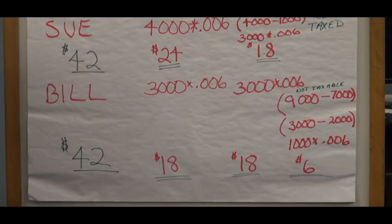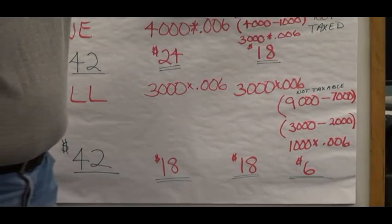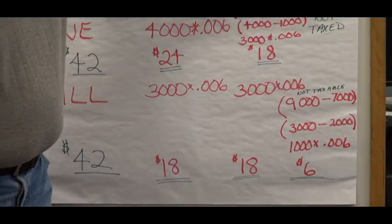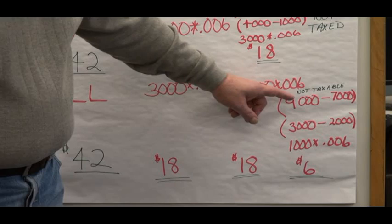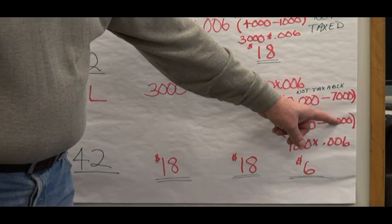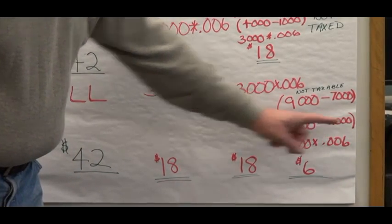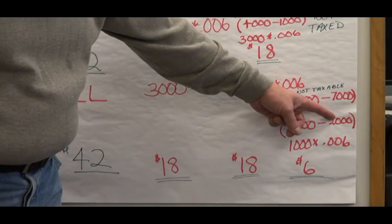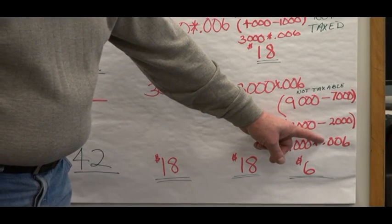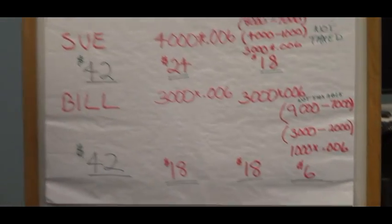In the third quarter, we can see that Bill has earned $9,000 in total. That is above the $7,000 cap. We take $9,000 minus $7,000, and $2,000 of that is not taxable. We subtract that non-taxable amount from his pay — $3,000 minus $2,000 — we get $1,000 times 0.006, and the net FUTA tax paid for Bill in the third quarter is going to be $6.